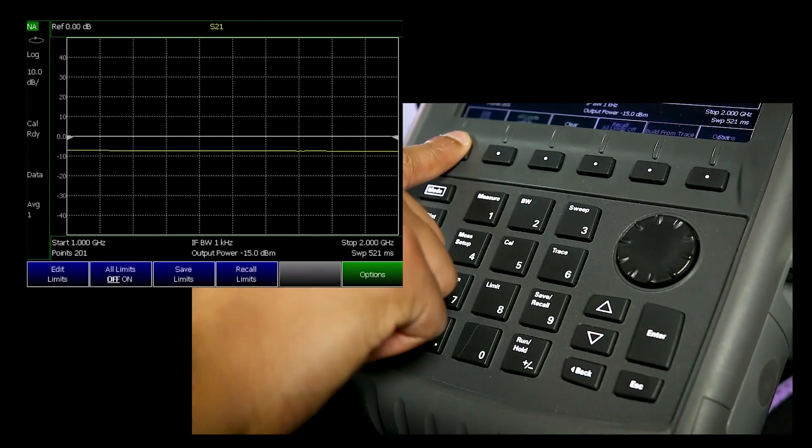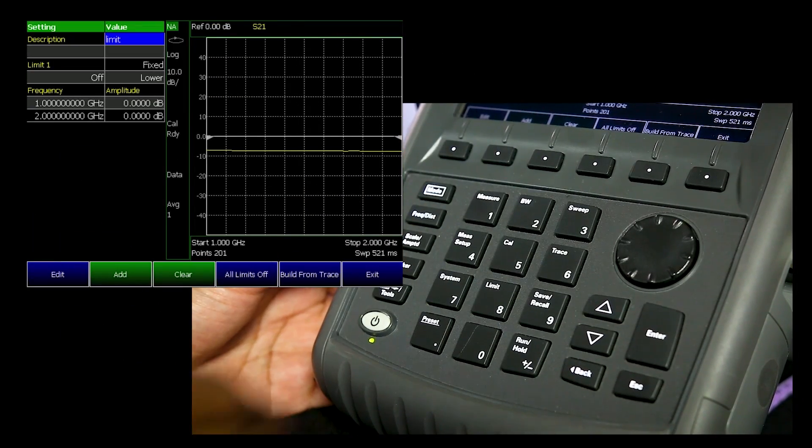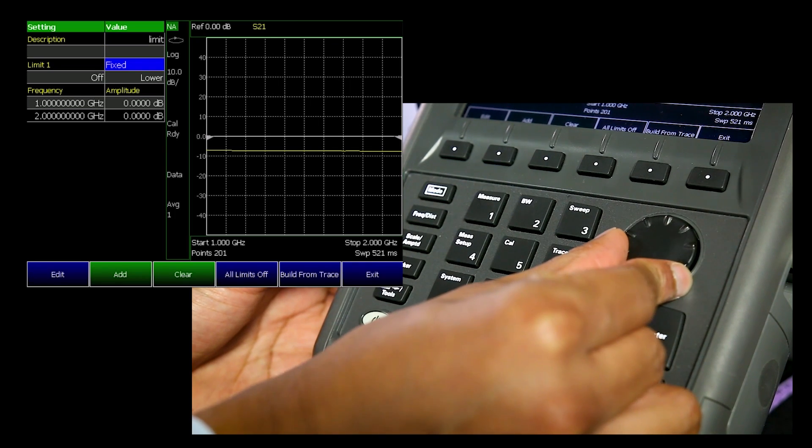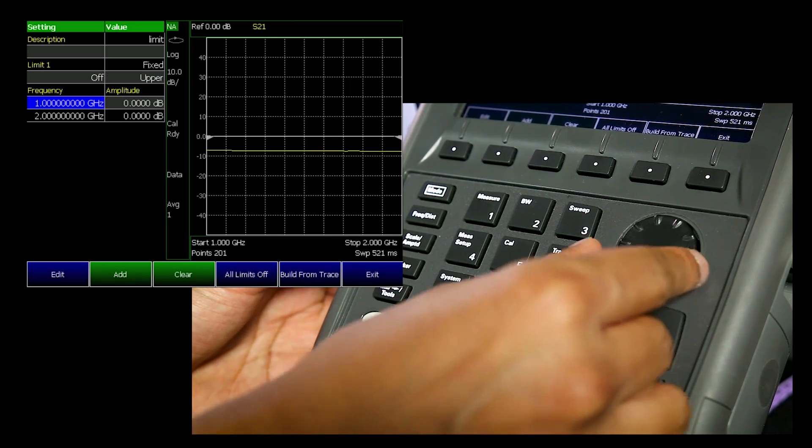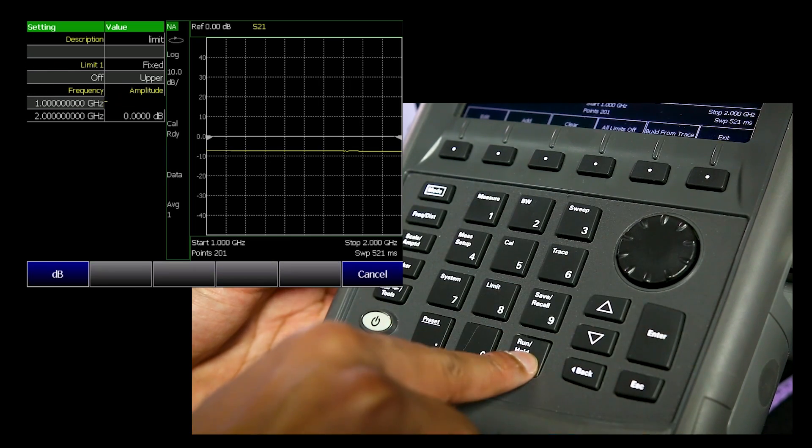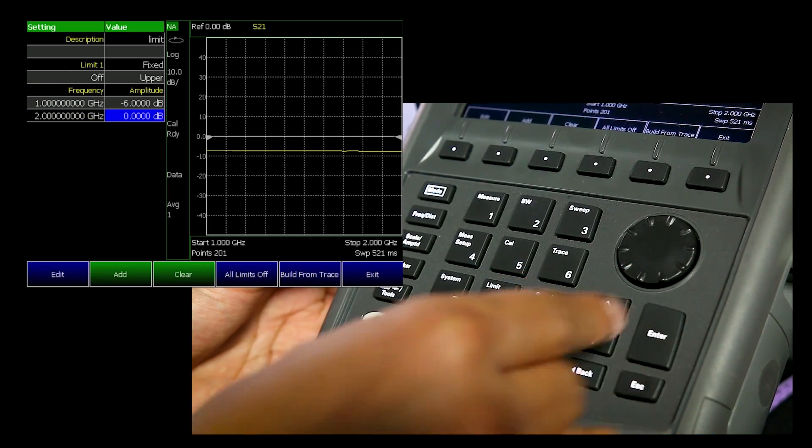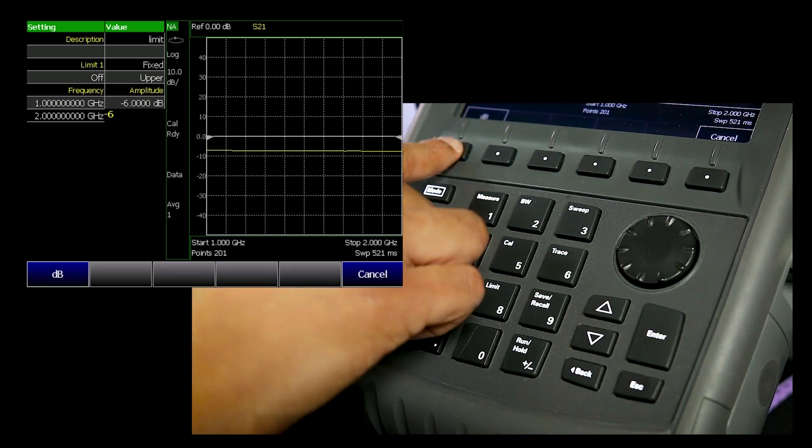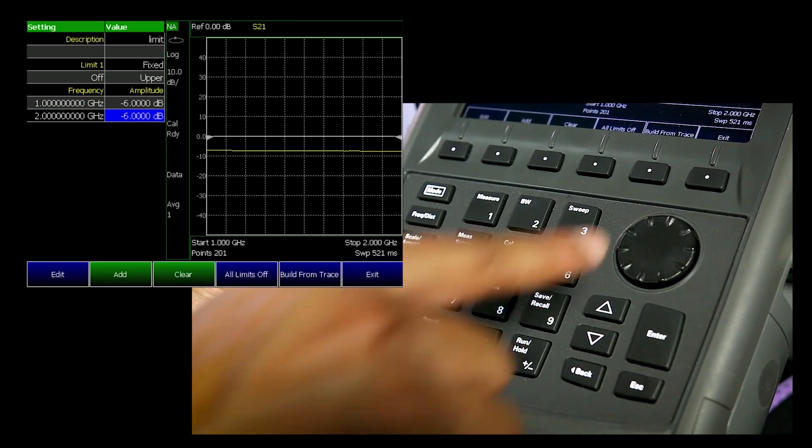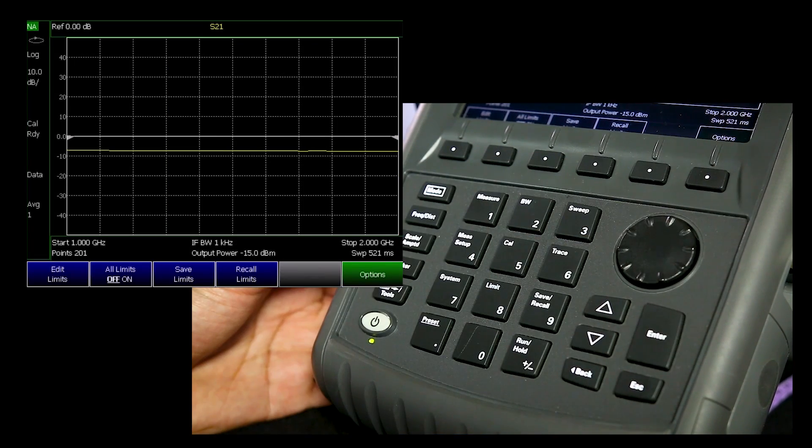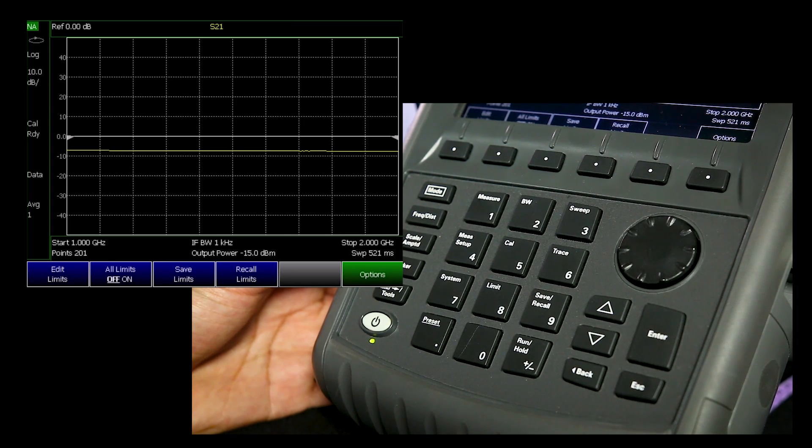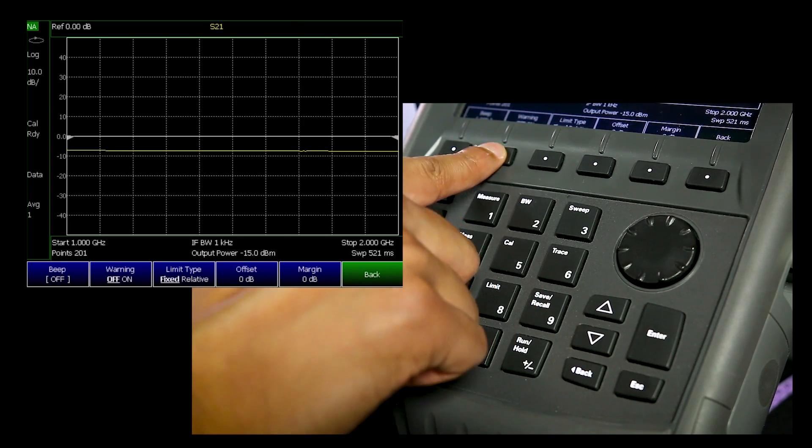Under the limit key, I'll select Edit Limits and set this to an upper limit with amplitude of minus 6 dB. Then exit. Under the Options tab, FieldFox has a warning feature that shows you Pass or Fail.